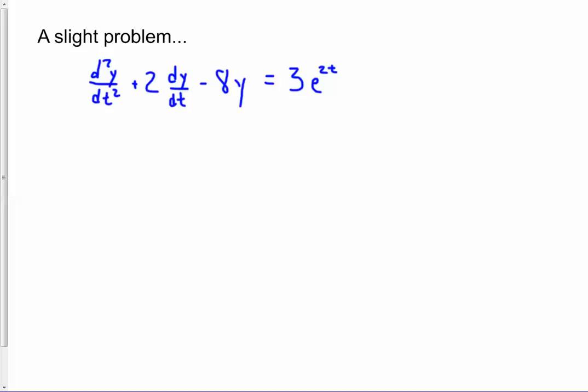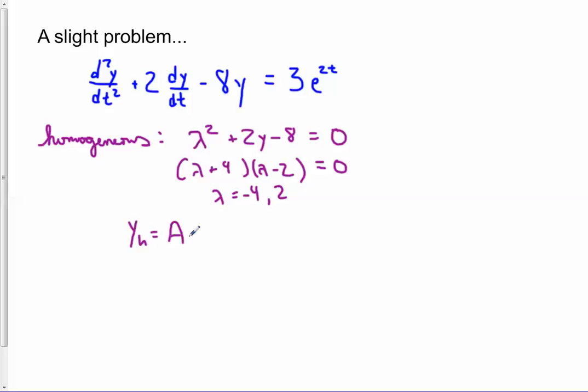So let's do the homogeneous first. We go right into the characteristic equation, which is lambda squared plus 2y minus 8 equals 0. This does factor lambda plus 4 and lambda minus 2 equals 0. And so we get lambda is negative 4 and 2.